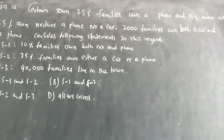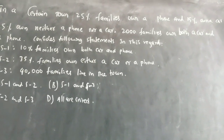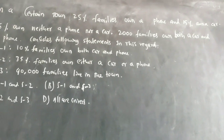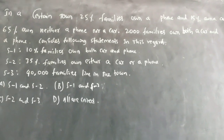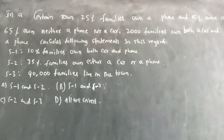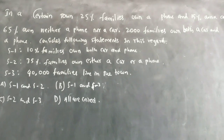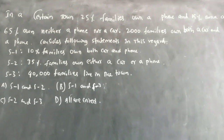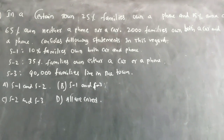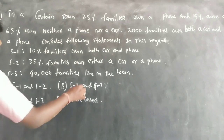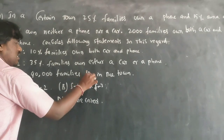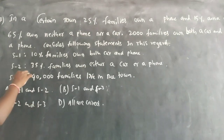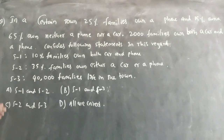S2 is 35% of families own either a car or a phone. S3 is 40,000 families live in the town. The question is asking which of the statements are correct.